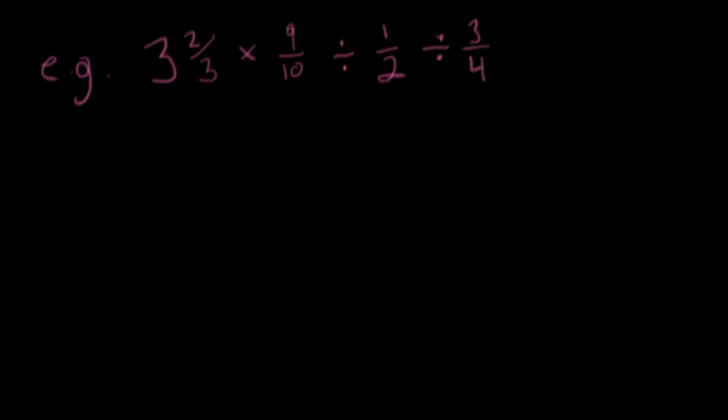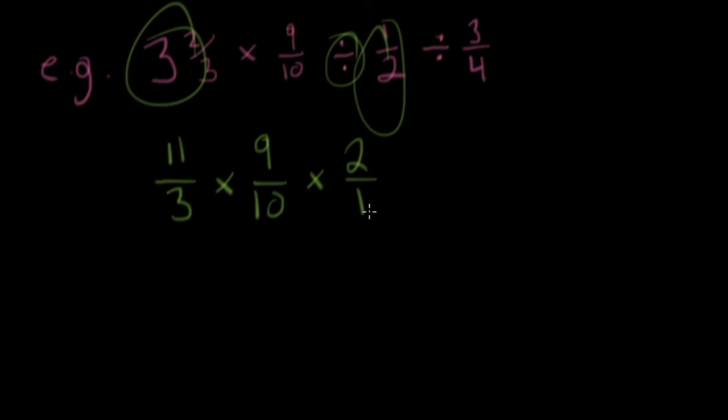So first things first, let's go and change this into an improper fraction. So that would become eleven over three. We still have this multiplying by that nine over ten. Hopefully you're getting excited and saying, oh my gosh, I can cross reduce. I'm going to change this to multiplying. And I'm going to flip this to two over one. And I'm also going to turn that into multiplying and turn that over four over three.